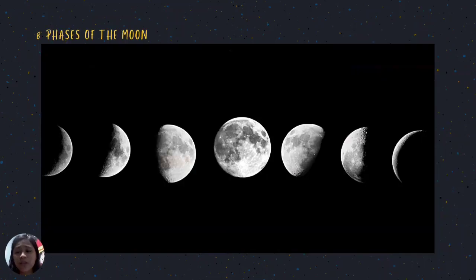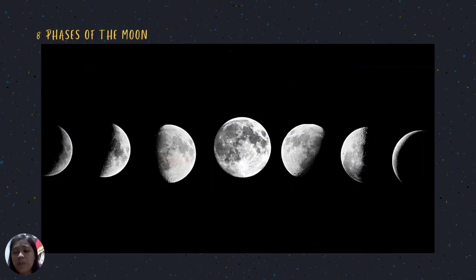You have learned in the previous lesson that the moon has eight phases: new moon, waxing crescent, first quarter, waxing gibbous, full moon, waning gibbous, last quarter, and waning crescent. The moon goes through these eight phases in 29 and a half days. The period it takes for the moon to complete the phases is called a month. The moon does not produce its own light — it only reflects light coming from the sun.